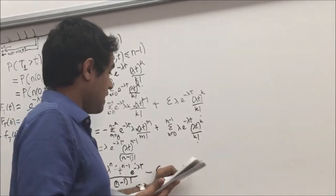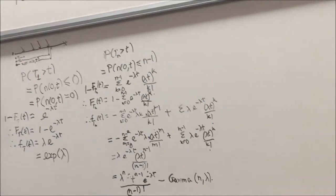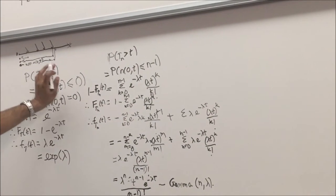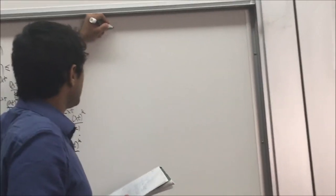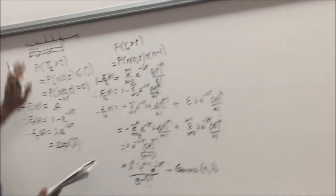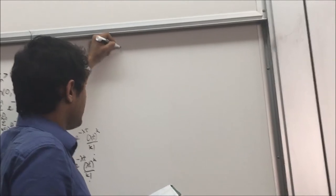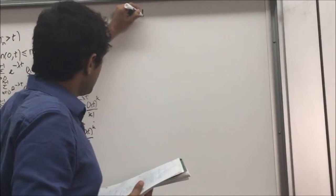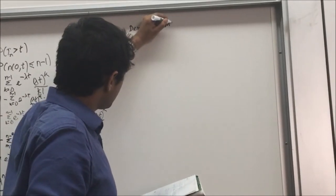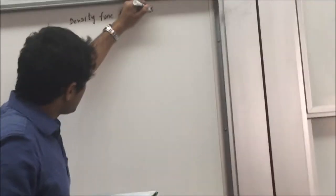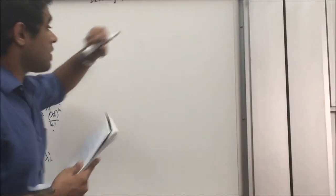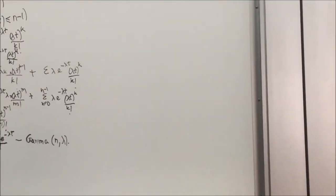So removing the common factor, we get lambda raised to N times E raised to minus lambda T by N minus 1 factorial, which represents the gamma function with parameter N minus 1. This is the density function for the nth arrival. Now we will be finding the density function for inter-arrival time.